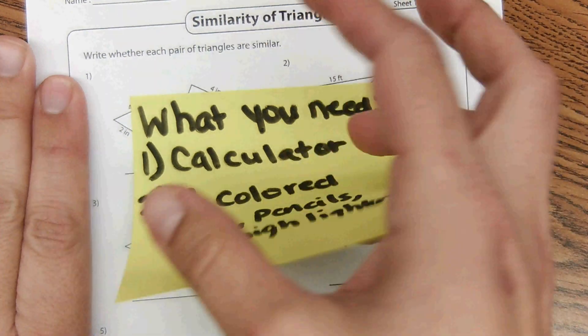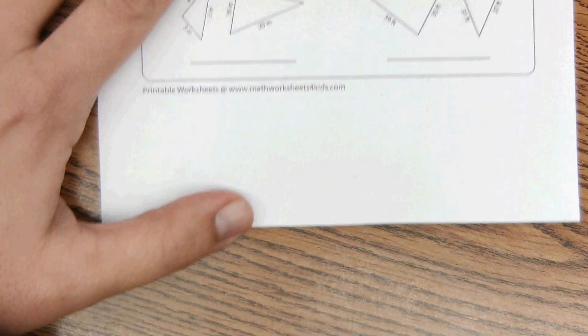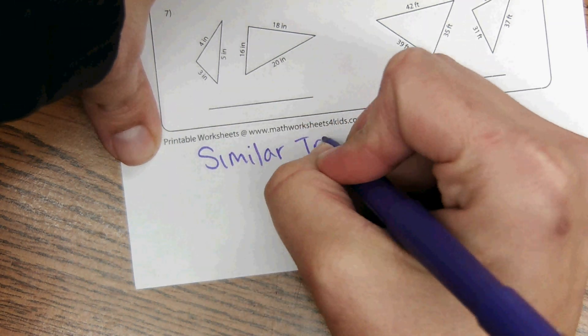We're at the similarity of triangles, which is in chapter 8. Some of you have gotten to this, some of you guys haven't. So at the bottom, we're going to do a quick little review of what similar triangles are.